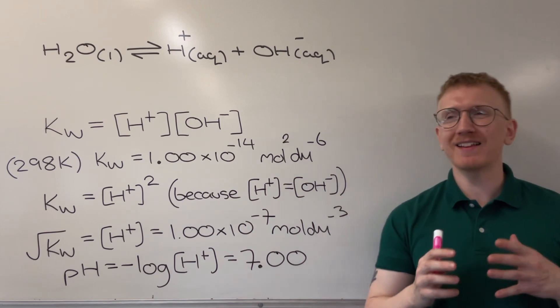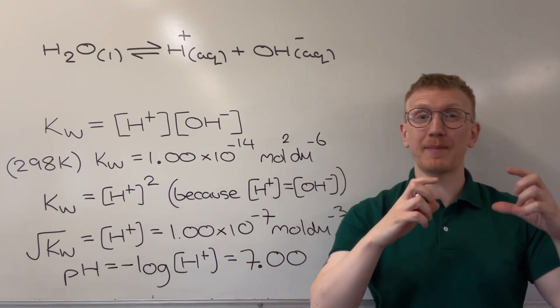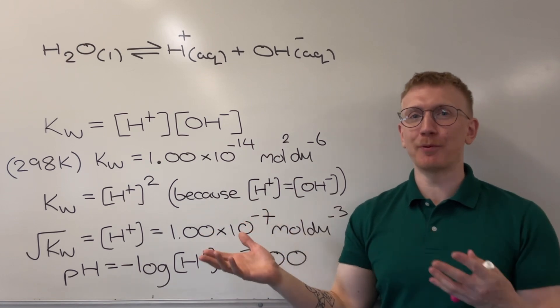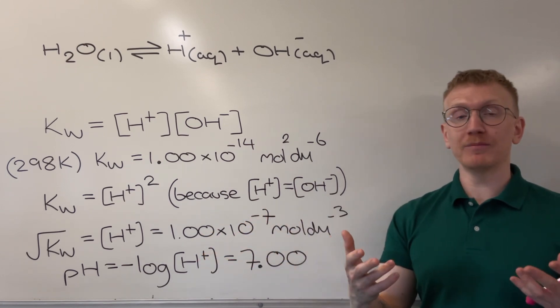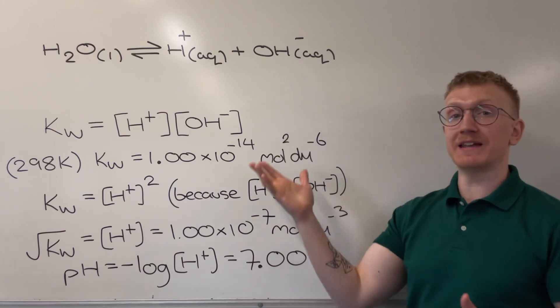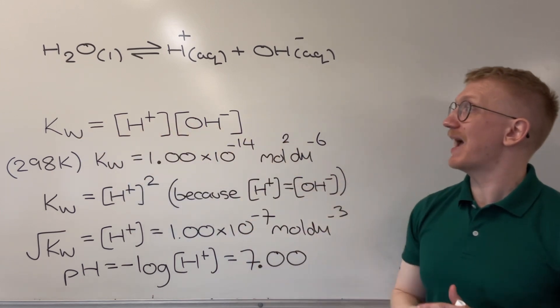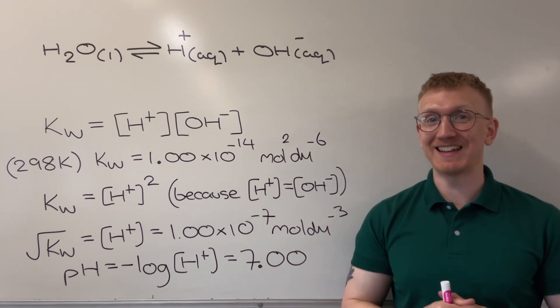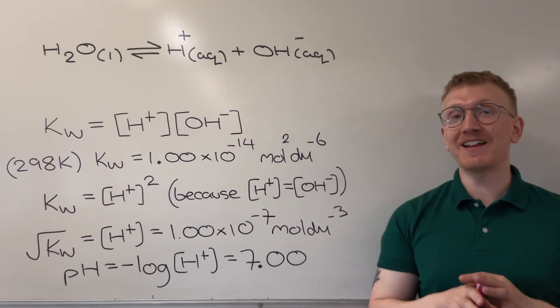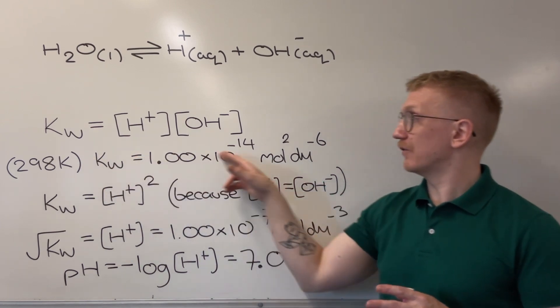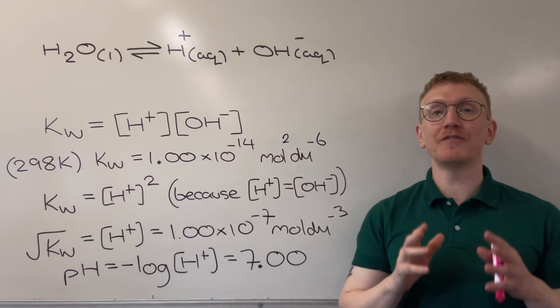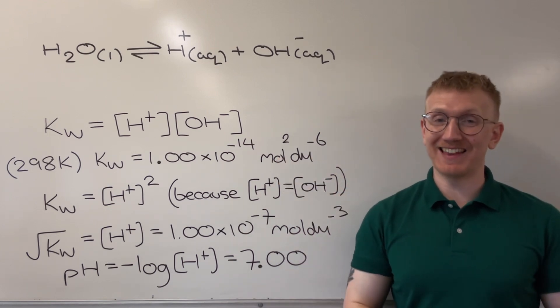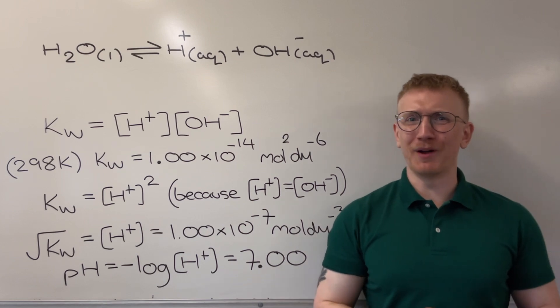That means when we write our KC, which would be concentration of the products divided by concentration of the reactants, we don't actually have any reactants to put on the denominator anymore. So our KC expression, which we then call KW because it's unique to water, is going to be H plus and OH minus only as the concentration terms. Now at 298 Kelvin, this value for the KW is 1 times 10 to the power of minus 14, and this is available on your data sheet in the exam. Look at the magnitude of that number.